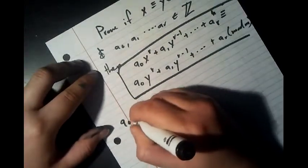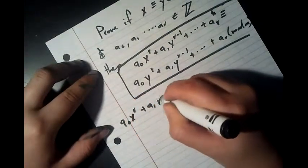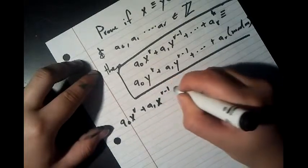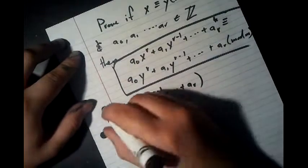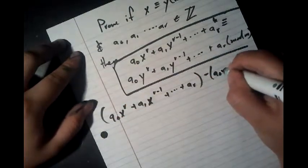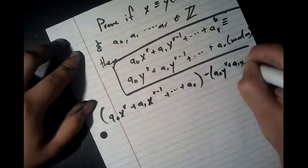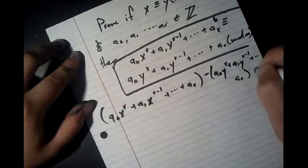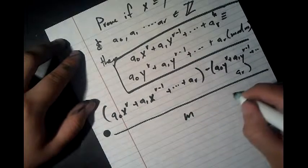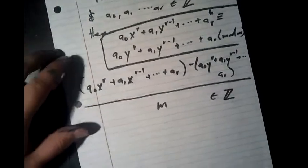So that means that a_0 x^r plus a_1 x^(r-1) plus dot dot dot plus a_r minus a_0 y^r plus a_1 y^(r-1) plus dot dot dot a_r all over m should be an integer.